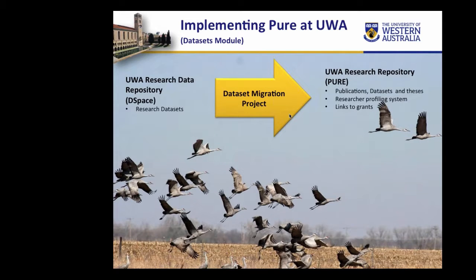The UWA Library has recently implemented the current research information system, Elsevier's Pure, as our research repository. This is a researcher profiling system which allows us to link publications, theses and grants to our researchers. We're also managing another separate repository which holds our research data sets, and this uses the DSpace platform.